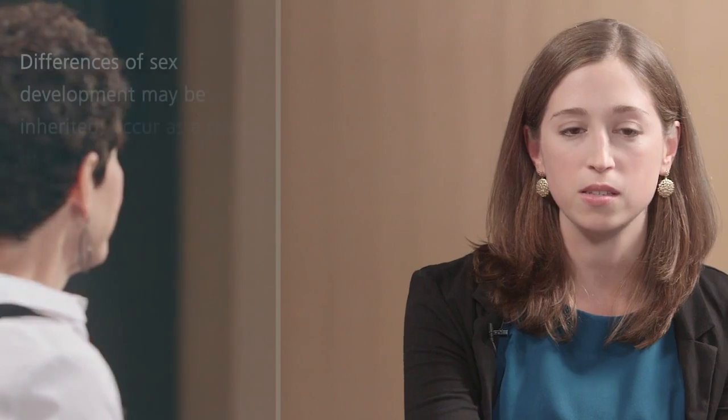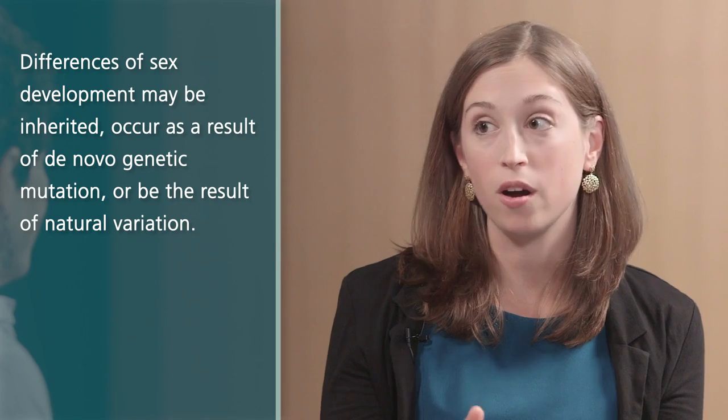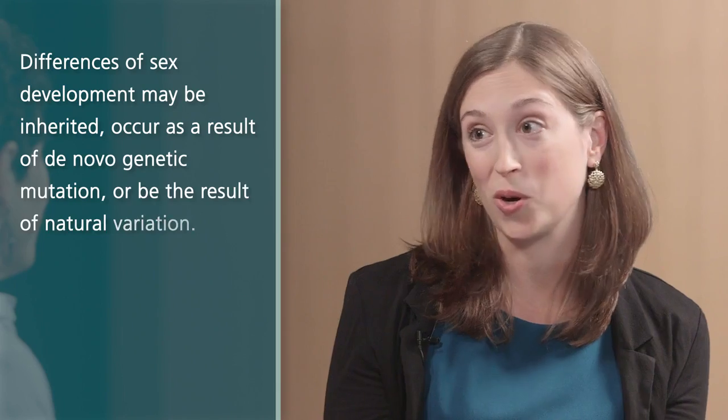How do differences of sex development occur? Differences in sex development occur on a congenital basis, meaning that people are born with them. Some of them are inherited — we see families where conditions like androgen insensitivity syndrome occur in many people. There are other instances where there are genetic conditions but they're not inherited; someone has a de novo genetic mutation that results in the development of a DSD. Other conditions like hypospadias may not have a known genetic link and just occur spontaneously as a natural variation.